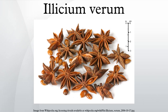Nomenclature: Illicium comes from the Latin 'illicio' meaning 'entice'. In Persian, star anise is called Badyen, hence its French name Badian. In India it is called Badian or Phulchakri, and in Pakistan it is called Badian.